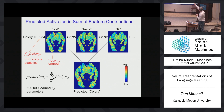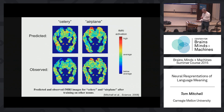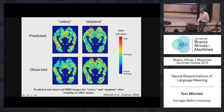How well do these predictions work? When we trained on 58 other nouns — not including 'celery' or 'airplane' — and then had the system predict those novel words, it predicted images for 'celery' and 'airplane.' Here are the actual observed images for those two words. You can see it correctly predicts some of the structure — this is fusiform gyrus — but not all of it. So it captures some of what's going on.